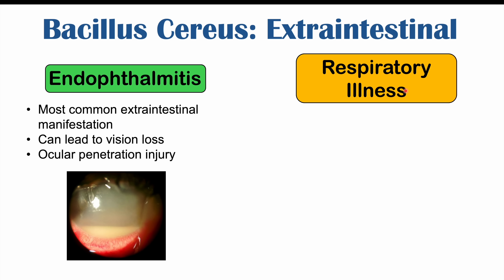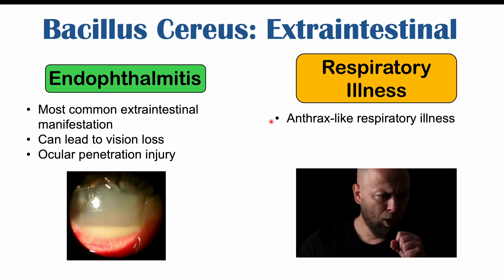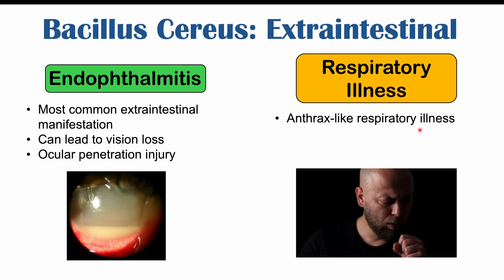Some individuals have also been exposed to Bacillus cereus by inhalation, leading to a respiratory illness. Inhaling certain strains of Bacillus cereus can lead to an anthrax-like respiratory illness. This is very rare and has only been described in a handful of cases, occurring in certain strains — more specifically Bacillus cereus biovar anthracis. This particular strain has similar toxins to Bacillus anthracis, the bacteria that causes anthrax. Signs and symptoms include fever and chills, dyspnea or shortness of breath, hemorrhagic mediastinitis with bleeding within the chest wall, and rapid respiratory failure. This has only been noted in a few cases in metal workers.